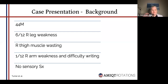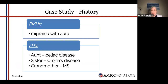So there's a case study I found online that I wanted to share with you. This patient was a 44-year-old male with a six-month history of right leg weakness, right thigh muscle wasting, and a one-month history of right arm weakness and difficulty writing. He also had difficulty doing up his buttons, affecting his activities of daily living, with no sensory symptoms at all. The only noteworthy thing in his medical history was migraine with aura, and in his family history there was a familial history of autoimmunity — particularly on the maternal side — with celiac, Crohn's, and MS all noted.